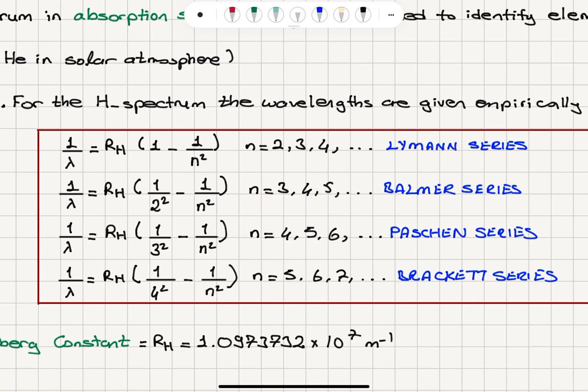For n equals 3, 4, 5, we go from n equals 2 to n equals 1. If we go from n equals 3 to n equals 2, or 4 to 2, or 5 to 2, we have Balmer series. n equals 4, 5 going from n equals 4 to 3 gives Paschen series. n equals 5, 6, 7 to 4 gives Brackett series. If the final energy level is 1, it's Lyman. If it's 2, it's Balmer. If it's 3, it's Paschen. If it's 4, it's Brackett series.